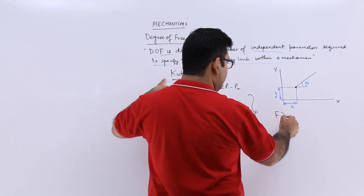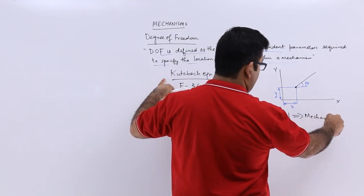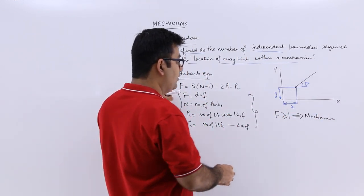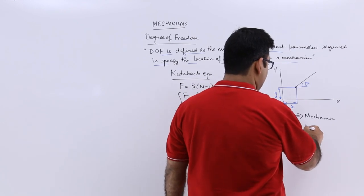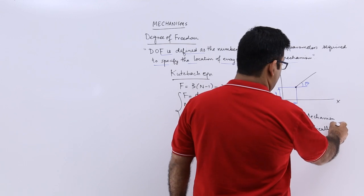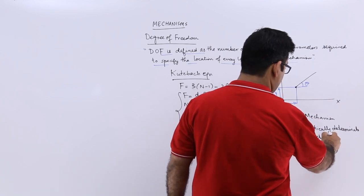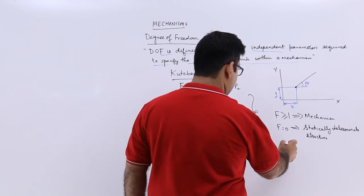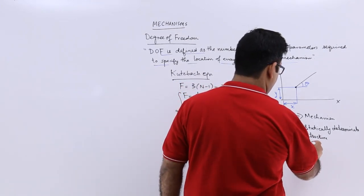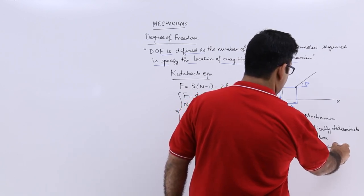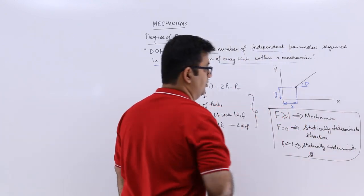Now if your degree of freedom is greater than or equal to 1, then such a thing would give you a mechanism which can actually function. If your degree of freedom is equal to 0, then such an arrangement of links is no longer a mechanism, rather it becomes a statically determinate structure. Now if your degree of freedom is less than -1, then this becomes a statically indeterminate structure.